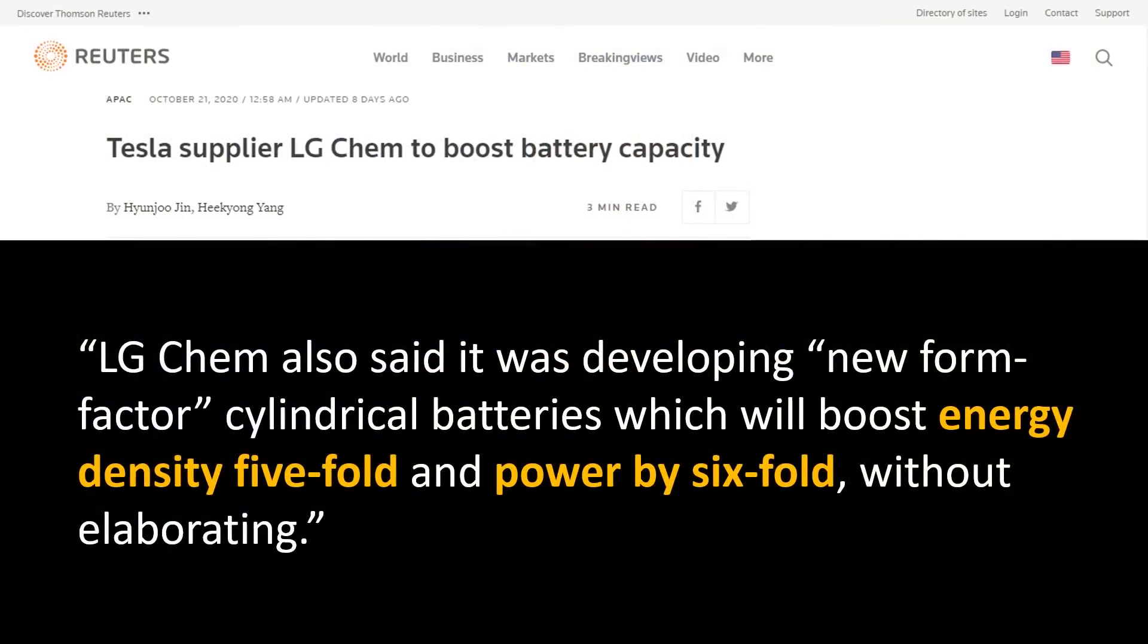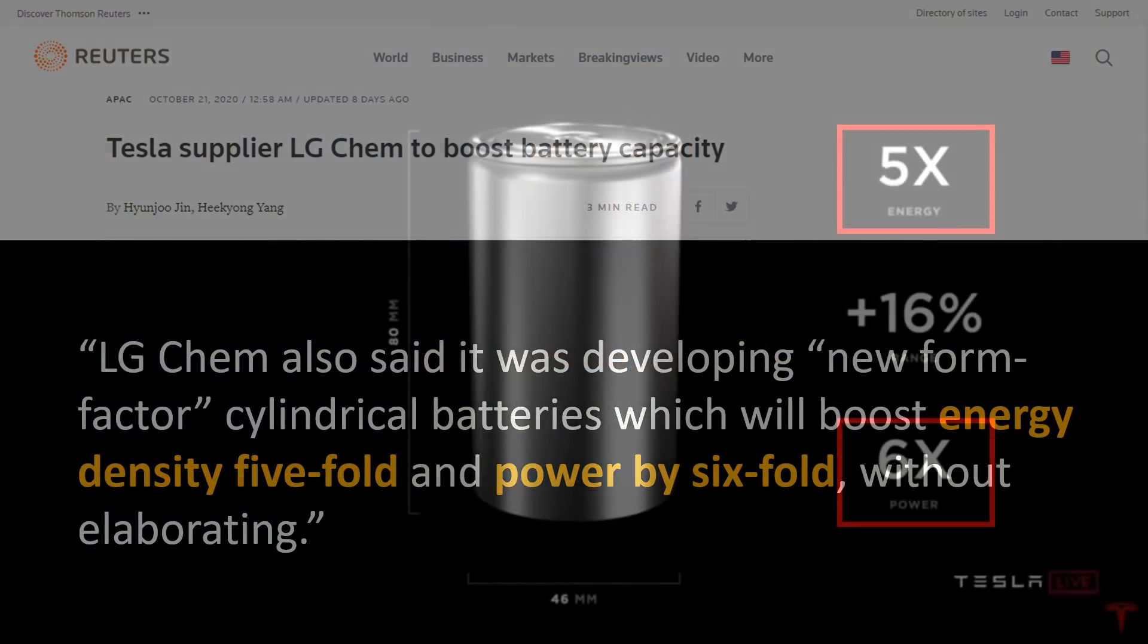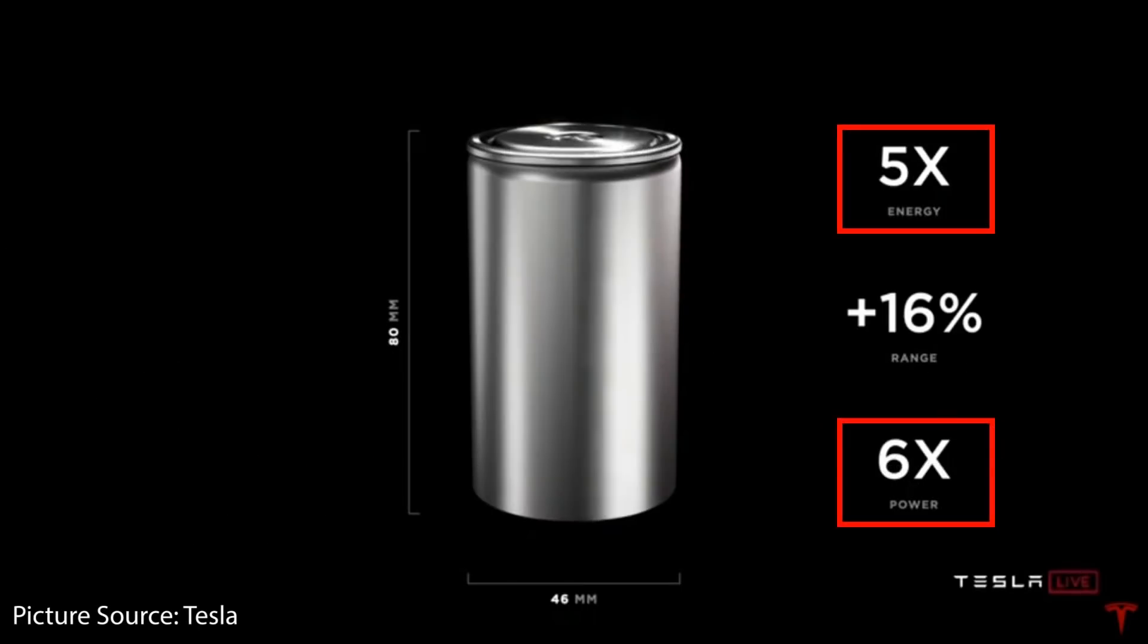Now there is one caveat, however. If you look at the article and what LG said, they said energy density fivefold. When Tesla talked about five times the energy being found in the 4680 battery cell, that does not mean five times the energy density—it just means because of the larger format, it has five times more energy capacity than the 2170 cell.